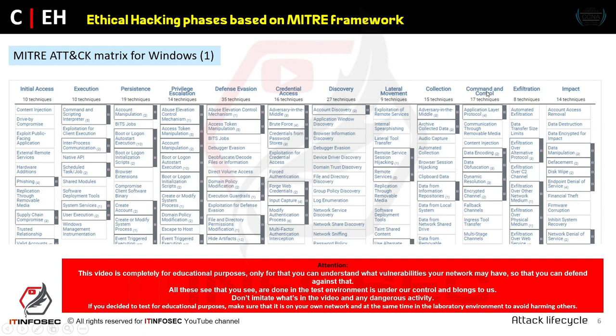Command and control (C2) means when the hacker, under a legal ethical hacking agreement, successfully hacks into systems and takes control via command line — sending commands to the target system to perform actions. For example, you might successfully enter a server and send commands to download data from it, upload files, or retrieve usernames and passwords. The target system is under your control by sending commands — this is called C2, command and control.